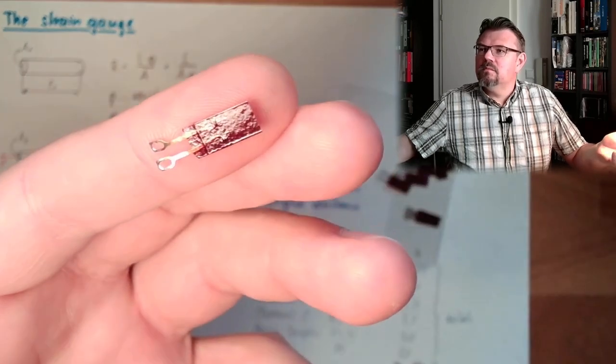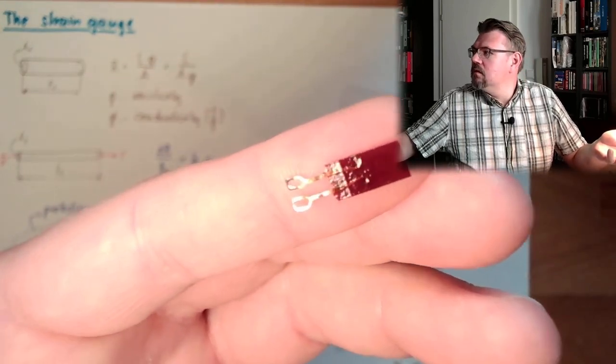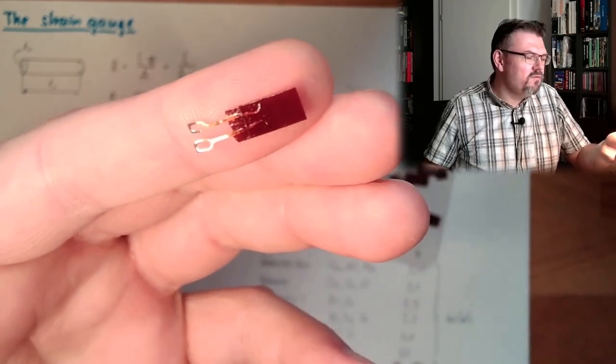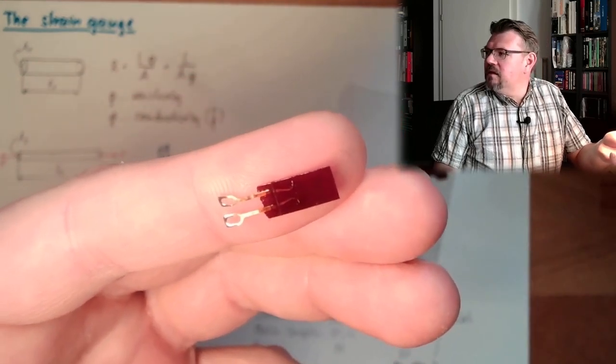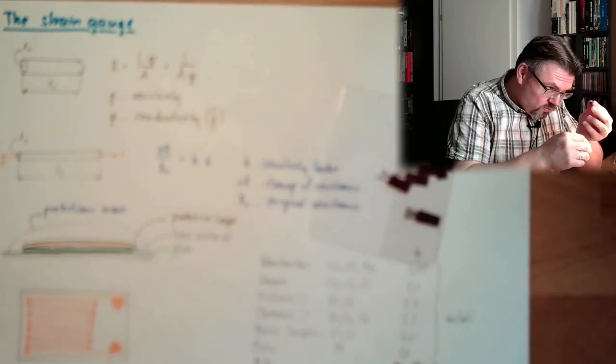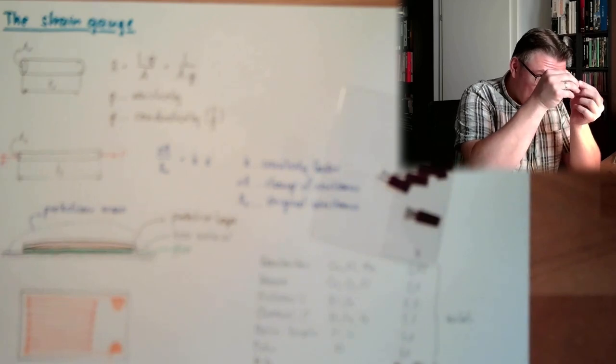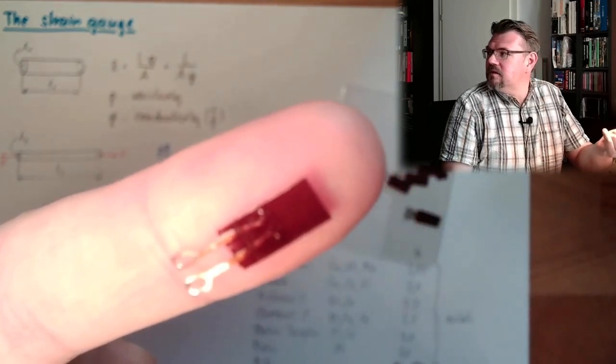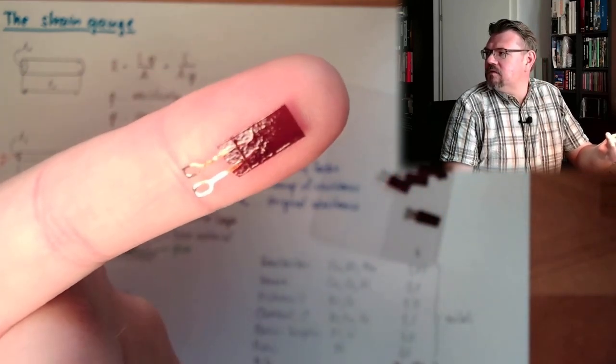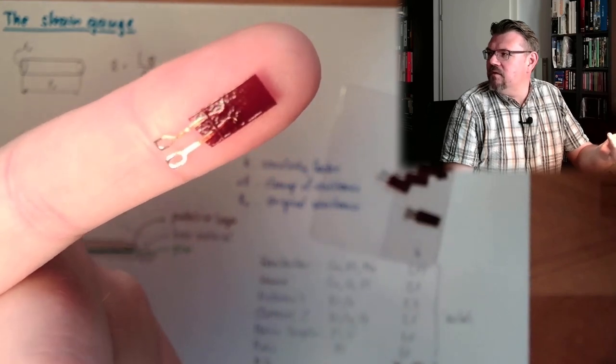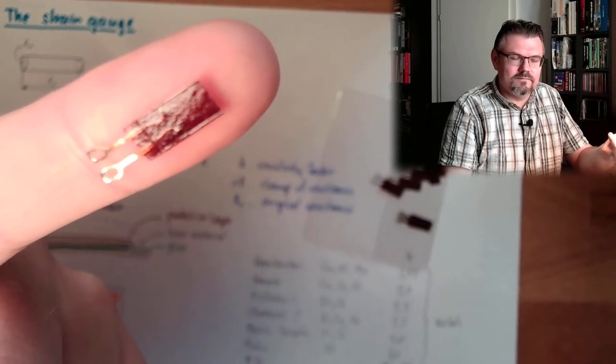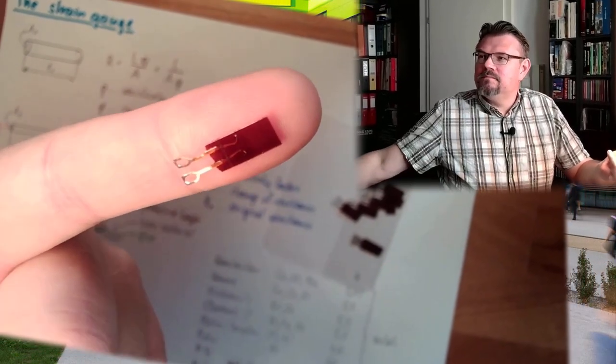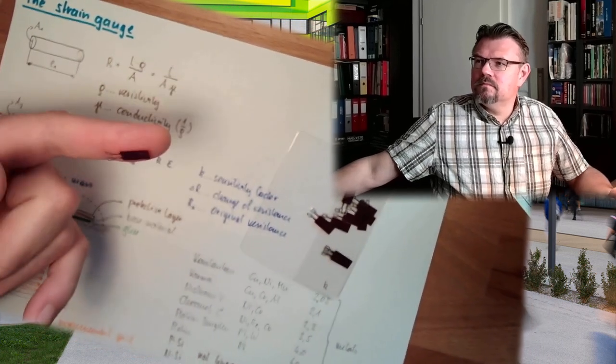So I'll try to focus here a little bit. You cannot even see the grid. The grid, you can see, if you really look at it and look through, then you see a tiny, tiny, tiny grid inside there. But that's actually it. This is how a strain gauge looks like in real. Not that big, right?